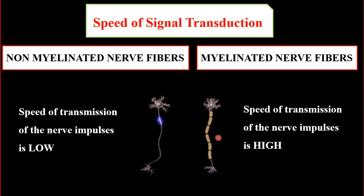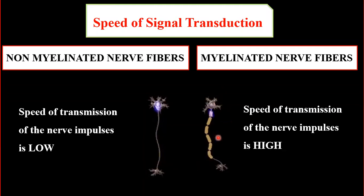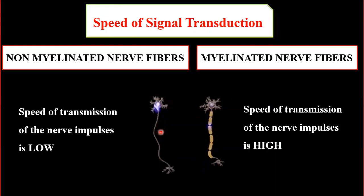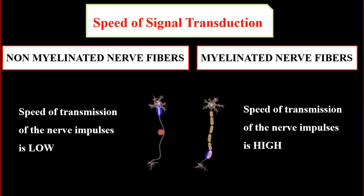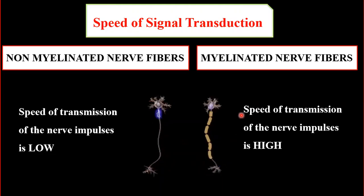The nodes of Ranvier help enable faster conduction of signal transmission. Non-myelinated nerve fibers are not surrounded by a myelin sheath and do not have nodes of Ranvier, so nerve impulse transmission is slower compared to that of myelinated nerve fibers.